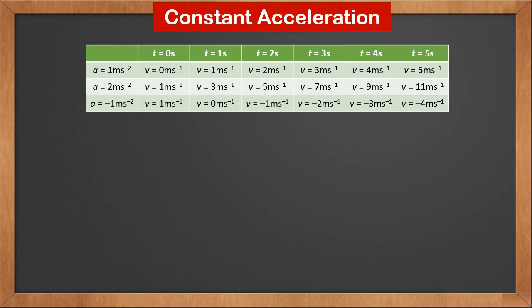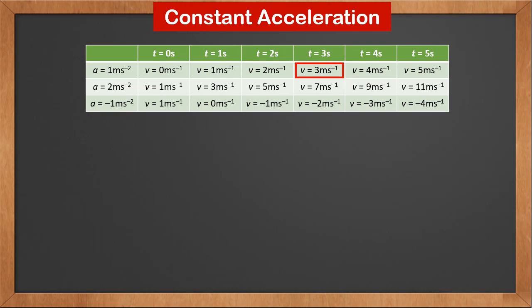Constant acceleration means the velocity changes at a constant rate. If you look at the first row of the table, the acceleration is 1 meter per second squared. At time 0, the velocity is 0, meaning the object starts from rest. At time 1 second, the velocity becomes 1 meter per second. At time 2 seconds, it becomes 2 meters per second, and at 3 seconds, 3 meters per second. The velocity keeps increasing by 1 meter per second every second.